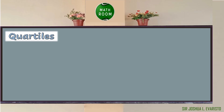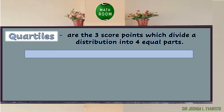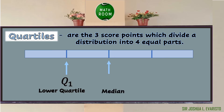At this moment, let us try to illustrate the measures of position, starting with quartiles. Quartiles are the three score points which divide a distribution into four equal parts. Suppose that this is the data set and you divide it into four equal parts. The first score point is what we call the lower quartile, or Q sub 1. The second score point is nothing but the median, or Q sub 2. The third score point is the upper quartile, or Q sub 3.